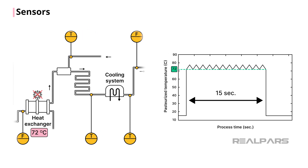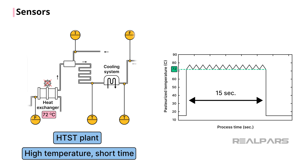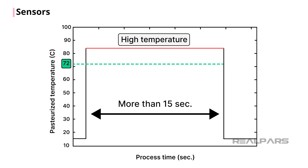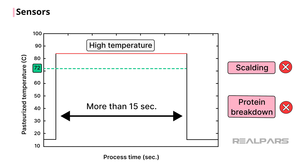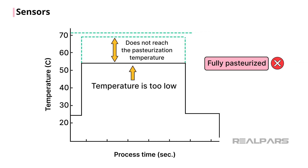A common way to reach these parameters is to flow the raw milk through an HTST, a high temperature short-time heat exchanger. The exchanger is heated to 72 degrees Celsius and is sized so that the milk at the intended flow rate has a residence time of exactly 15 seconds. If the temperature is too high, or if the milk remains at an elevated temperature for too long, scalding or protein breakdown may occur. If the temperature is too low, or if the milk does not reach the pasteurization temperature, the milk may not be fully pasteurized.